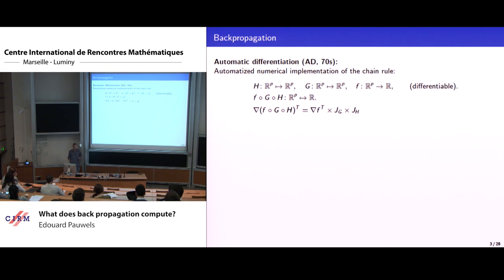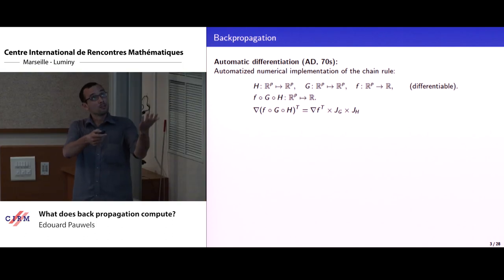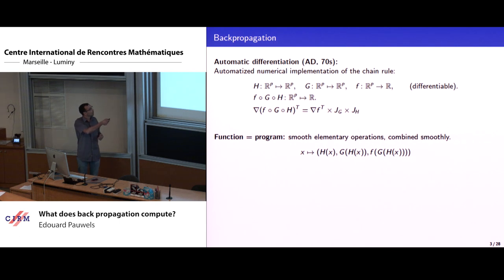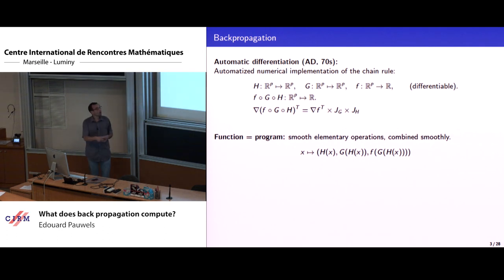Backpropagation is an instance of automatic differentiation — an automatized application of the rules of differential calculus. If you have a function in the form of a composition and everybody is smooth, you can compute its gradient by multiplying Jacobians evaluated at proper points, and use the fact that the Jacobian of a function is simply the gradient transpose. This abstraction captures the fact that a program implements a function by combining smooth elementary operations in a smooth way — computing all intermediate steps and outputting the last one.